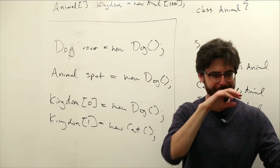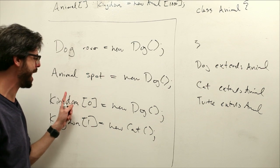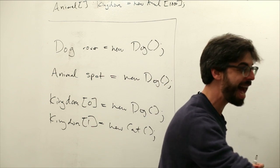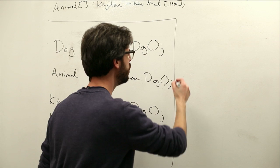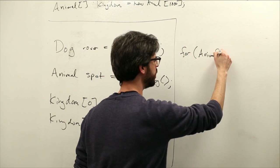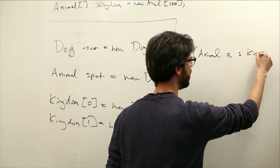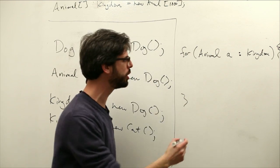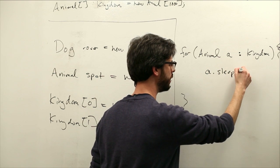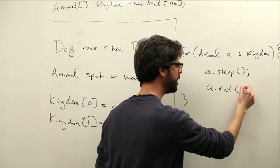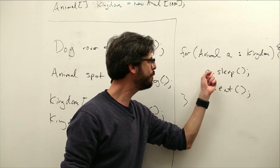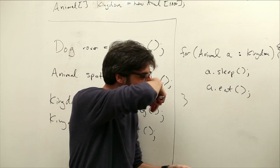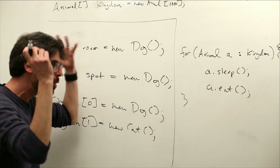What happens when we loop through that array? We have this new kind of loop that we can do. We can say for every animal a in the kingdom array, I could say a.sleep, a.eat. I could still loop through all of the animals, and when it gets to each one, I don't have to say if it's a dog, sleep like a dog, if it's a cat, sleep like a cat. That's the magic of polymorphism and inheritance is it just knows how to do it.